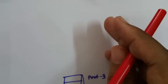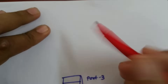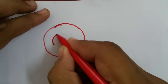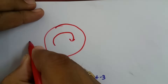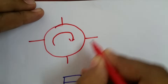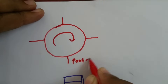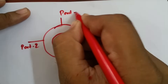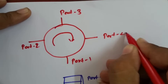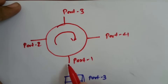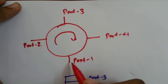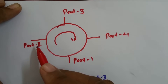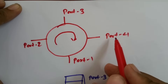Let us try to understand circulator function with respect to a 4-port circulator. I have a 4-port circulator — let us say this is port 1, this is port 2, this is port 3, and this is port 4. In this, if we give input at port 1, output is circulated in the clockwise direction, so output will be forwarded to port 2, and output at port 3 and port 4 will be zero.